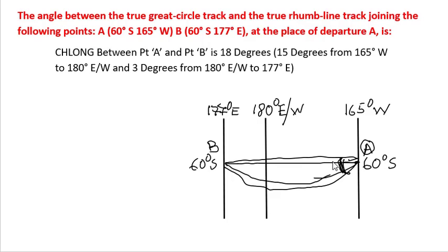So before we proceed with this question, to solve this question, first thing we need to find out is the change in longitude. Change in longitude between A to 180 degrees east-west is 15 degrees, that is 180 minus 165. And from 180 degrees east-west to 177 degrees east is 3 degrees, that is 180 minus 177. So total Ch-long or change in longitude is equal to 18 degrees.